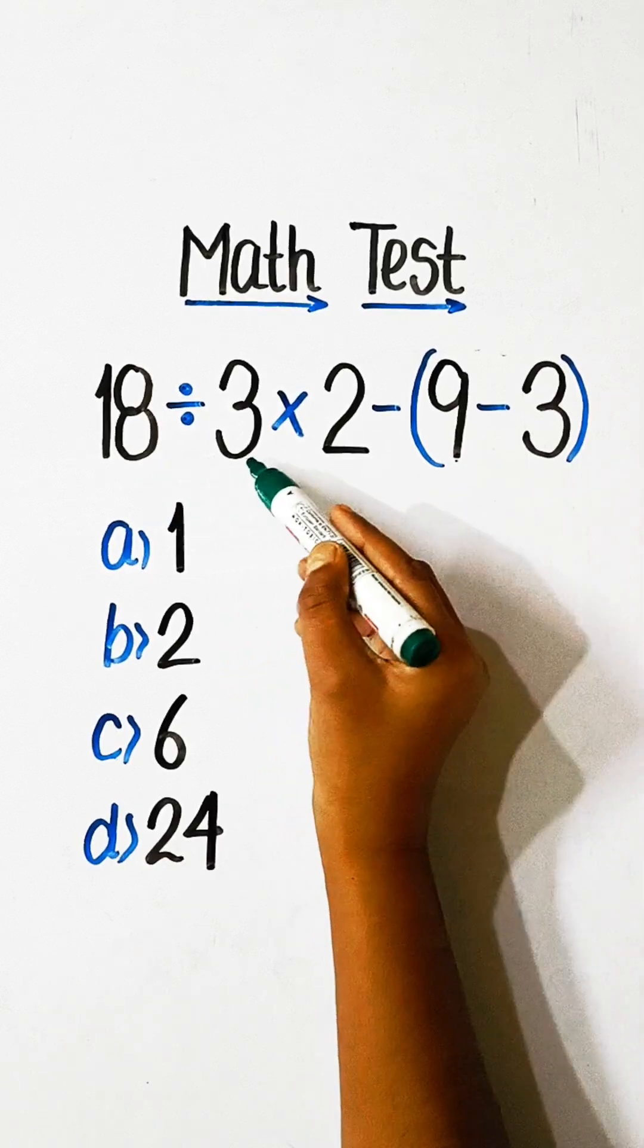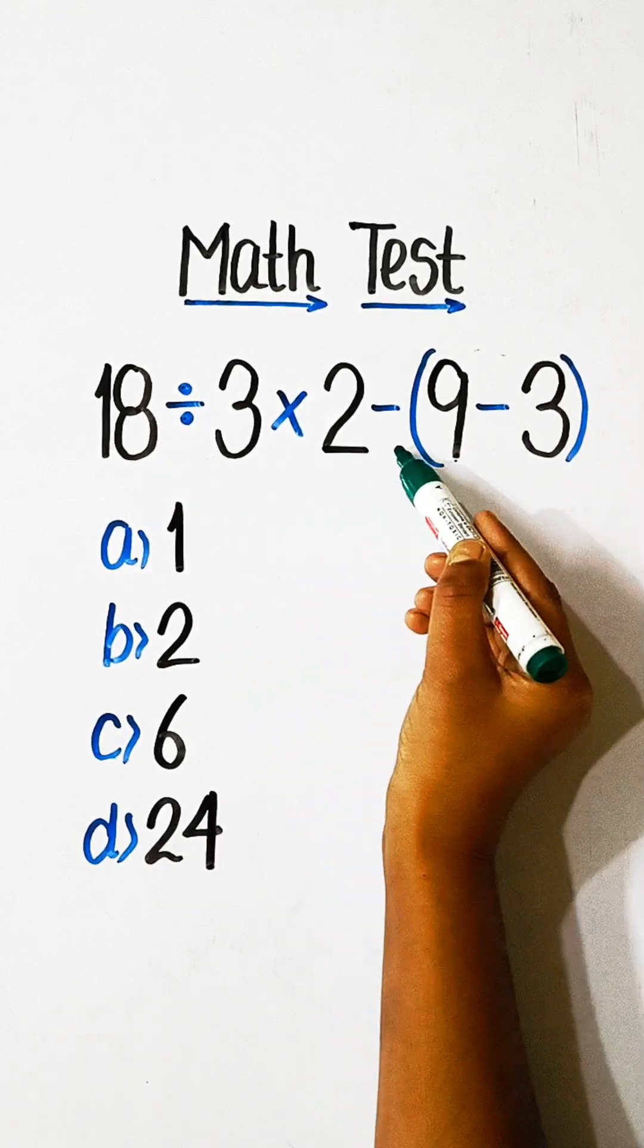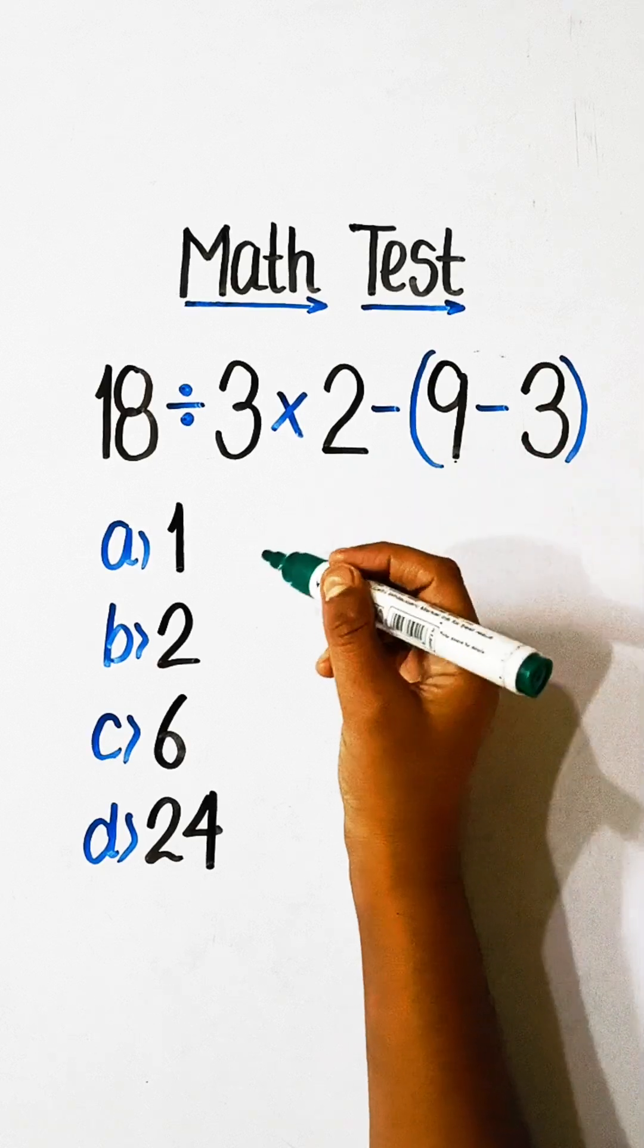18 divided by 3 multiplied by 2 minus 9 minus 3 equals to what?